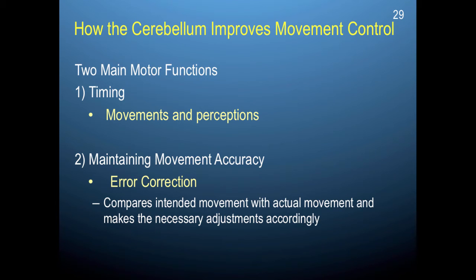Now we move on to the cerebellum. The cerebellum is really important for improving movement control. It has two main functions: timing and maintaining movement accuracy. The timing element closely tracks movements and perceptions, and maintaining movement accuracy is highly involved in error correction. What the cerebellum does is compare the intended movement with the actual movement and makes the necessary adjustments. It's becoming more accepted that people can be intelligent in very different ways, and one form of intelligence involves elements of movement control.